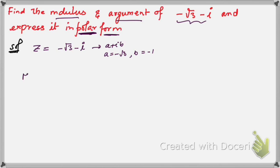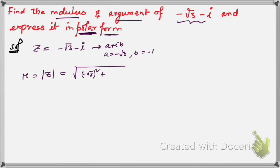First we find the modulus. r = |z| = √(a² + b²). In this case that gives us √((-√3)² + (-1)²) = √(3 + 1) = √4 = 2. So the modulus r = 2.